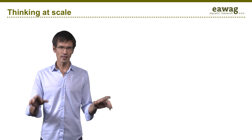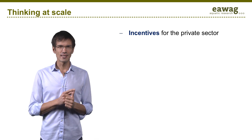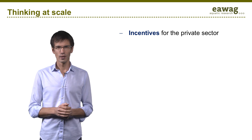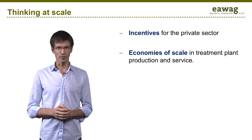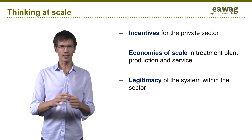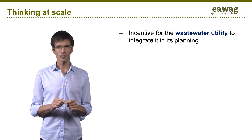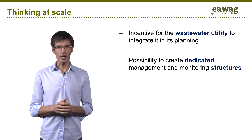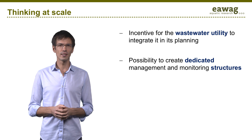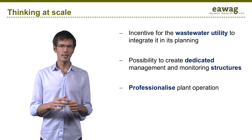Thinking at scale when planning for decentralized wastewater treatment is critical for several reasons: to provide incentives for the private sector — both for technology supply and O&M services; to reach economies of scale in production and service; to get recognition for the role of decentralized systems within the water sector; to lead the wastewater utility to integrate these systems in its planning; to trigger the creation of dedicated structures with experts able to provide guidance, troubleshooting services, and monitoring; and to professionalize plant operation through capacity building and licensing structures.